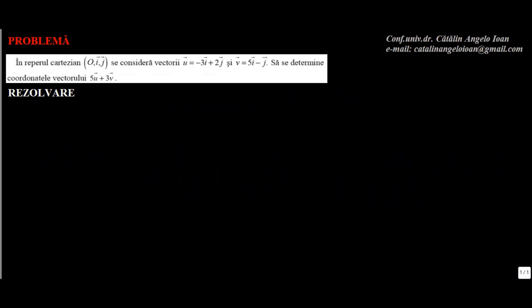În reperul cartezian Oij se consideră vectorii u mic egal cu minus 3i plus 2j și v mic egal cu 5i minus j. Să se determine coordonatele vectorului 5u plus 3v. Desfacem: 5 pe lângă u, adică minus 3i plus 2j, plus 3 ori v, adică 3 ori 5i minus j.